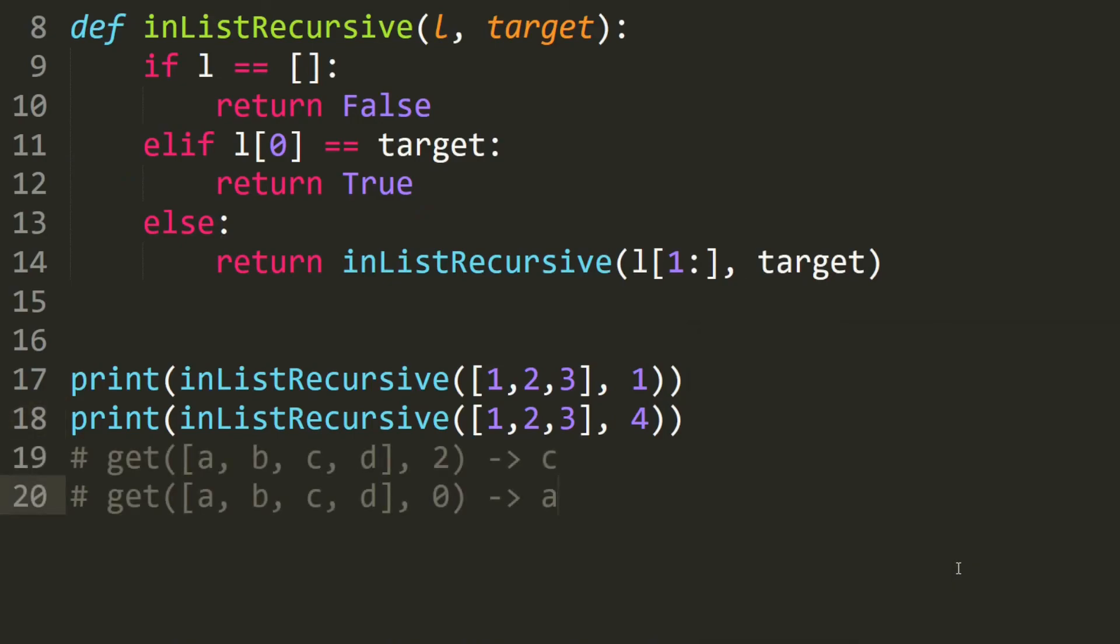And that is basically it for today. In the next video, I will show you how to get an element in the list based on the index using recursion. So for example, if we have this list and we want to get the second index, then it would be c because this is zero, one, and this is two. So we want to return c. As for this one, if we want to get zero, it is the first element, which is a, and I'm going to show you how to do this in the next video.